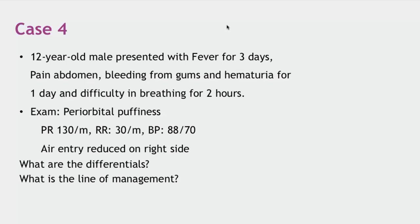The key emphasis here is: there is fever with evidence of bleeding. What kind of bleeding is it — DIC or thrombocytopenia? It is mucosal bleeding — bleeding from gums and from the renal tract — suggesting thrombocytopenia. Reduced air entry on the right side suggests fluid collection, i.e., capillary leak. So: fever plus thrombocytopenia plus capillary leak — your common differentials narrow down to dengue, enteric fever, malaria, leptospirosis, and rickettsia.